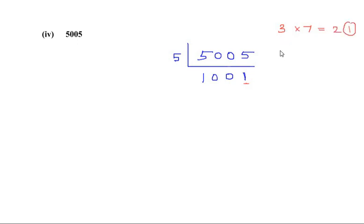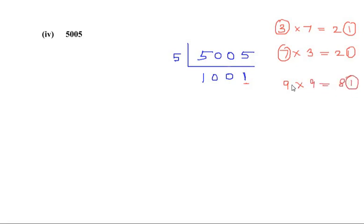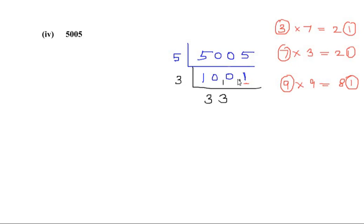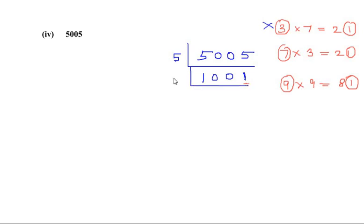For example, 3 times 7 gives 21, so the table of 3 has a multiple ending in 1. Similarly, 7 times 3 gives 21 in the table of 7, and 9 times 9 gives 81 in the table of 9. Let us try 3 first: dividing 1001 by 3, we get a remainder and see that 1001 is not divisible by 3. So that option is gone.